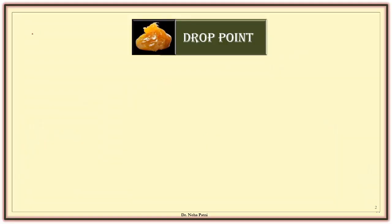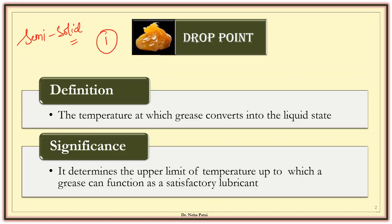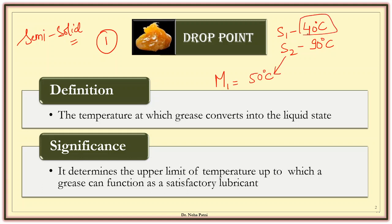The first property belongs to a semi-solid lubricant, that is grease. Grease has two properties. The first one is drop point. Drop point is basically the temperature at which the grease converts into liquid state. So if sample one is getting liquefied at 40 degrees and sample two at 90 degrees, that means you cannot use it beyond that temperature. If a machine is working at 50 degrees, you have to use sample two because sample one will not be stable — the liquid comes out of the grease at 40 degrees. The major significance is it determines the upper limit of the temperature up to which the grease can function.